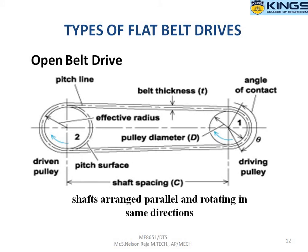There are different types of flat belt drives. The first is the open belt drive. The belt circulates around two pulleys — a driving pulley and a driven pulley — which are in parallel condition. Due to friction between the belt and pulley, power is transmitted. In an open belt drive, both the driving pulley and driven pulley rotate in the same direction, whether clockwise or anticlockwise.